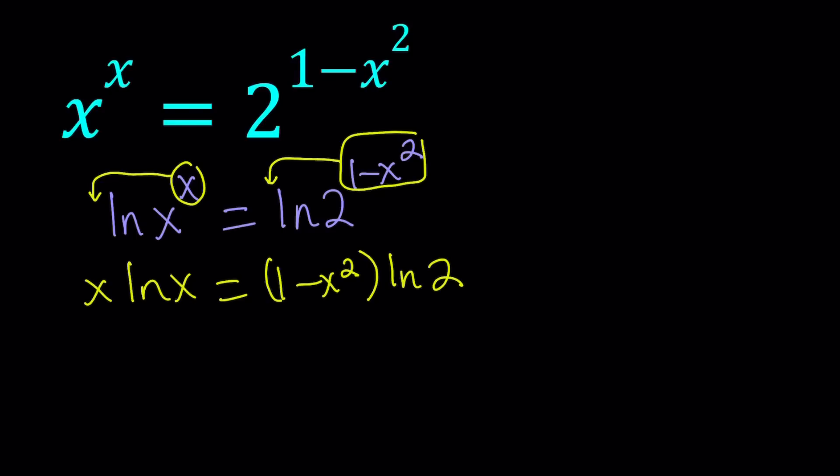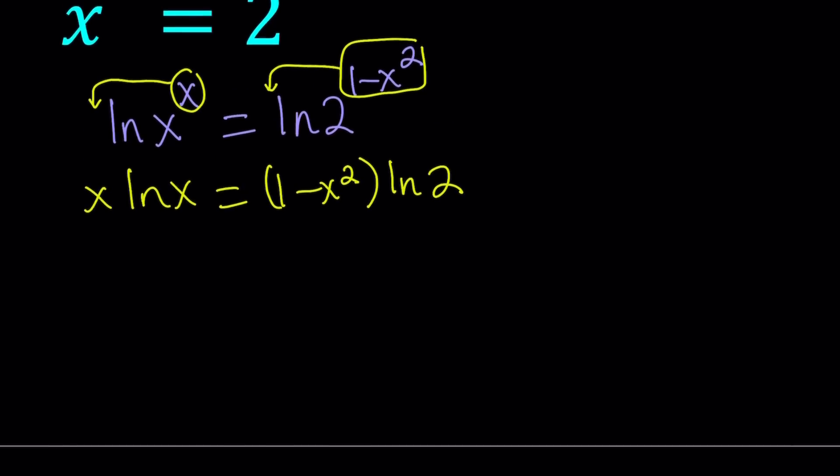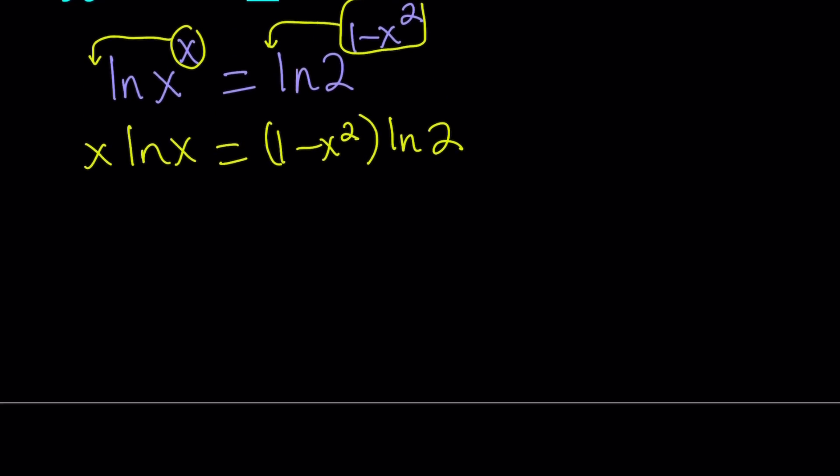ln 2 is a constant, so it's kind of like a number. The purpose of ln-ing both sides is to get rid of the exponents. Because when you don't have any exponents, the expression looks more polynomial, or at least it's easier to handle for many reasons. So now we have the following equation.